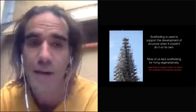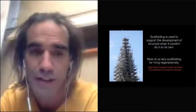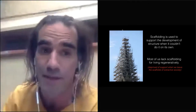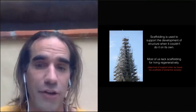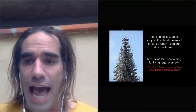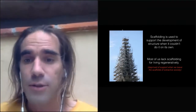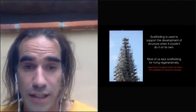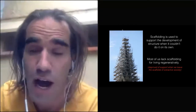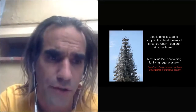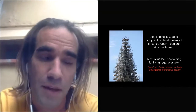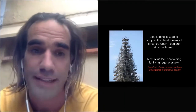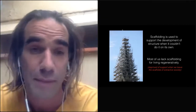If we think about scaffolding in terms of architecture, it's a support structure used to help construction — the building could not be constructed without these support structures, but then it doesn't need them later on. The key insight is that most of us lack the supports to develop in the direction we need to go, so we're not able to live regeneratively. If we leave the scaffolds of an extractive society, we find ourselves deprived of support and life becomes much more difficult. This is why there are so many barriers and why it feels so heroic to live regeneratively — and it slows down the adoption of regenerative practices.